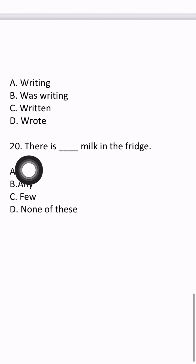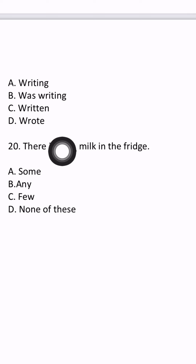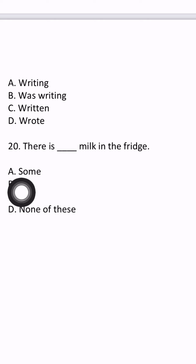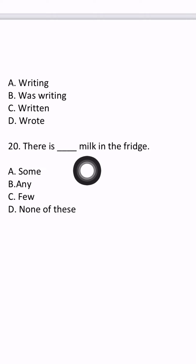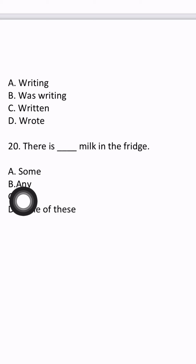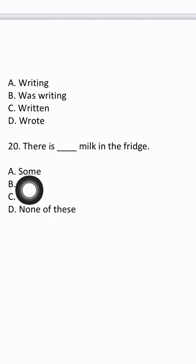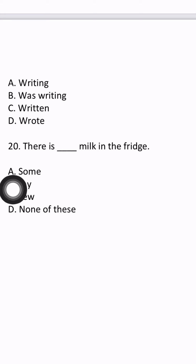Question number 20: 'There is blank milk in the fridge.' It looks like a determiners question. Options are some, any, few, or none of these. Milk is uncountable. 'Any' is used in negative sentences. 'Few' is for countable things. 'None of these' is not correct. So the remaining option is 'some.' There is some milk in the fridge. If something is uncountable, we use 'some.'